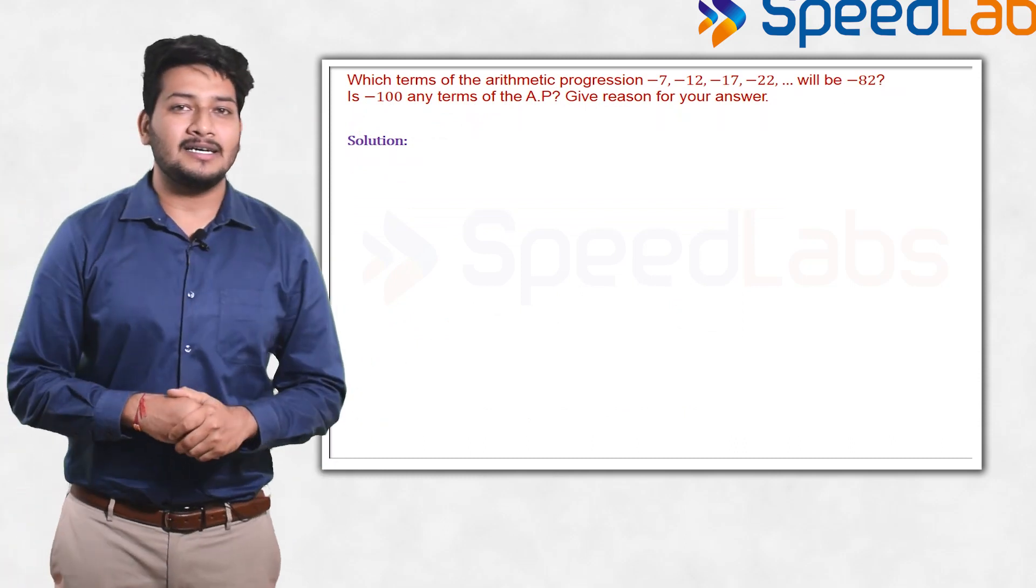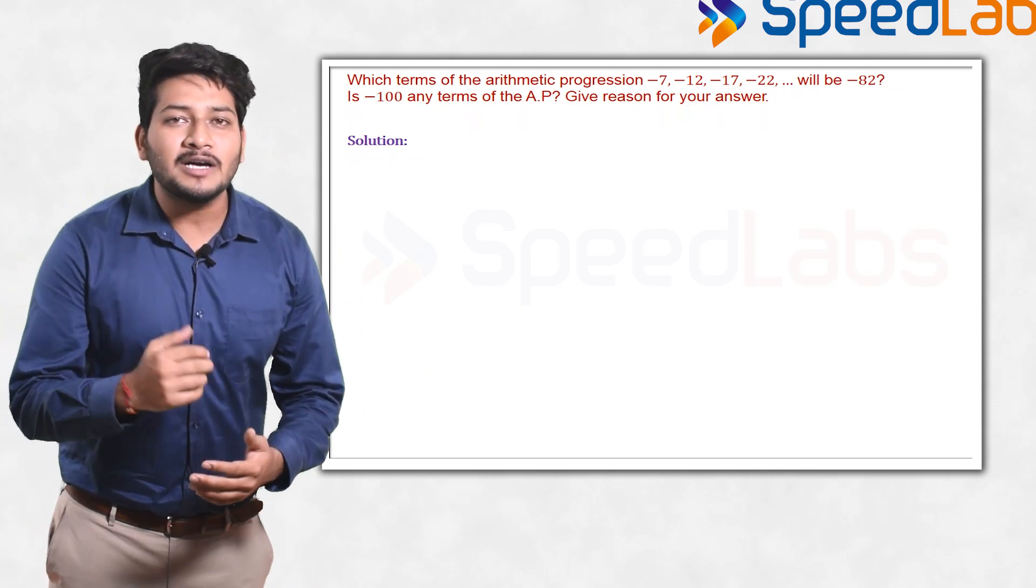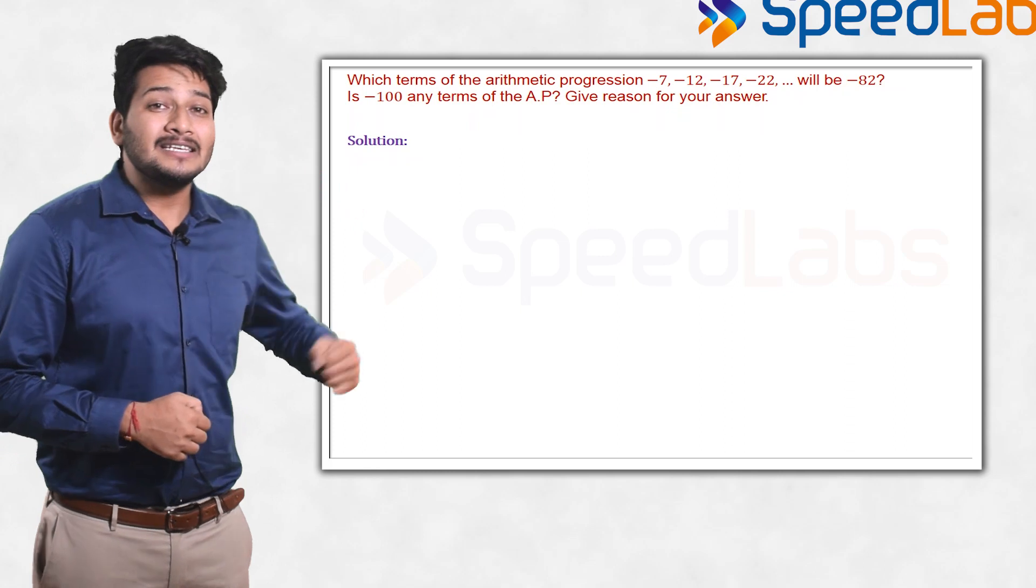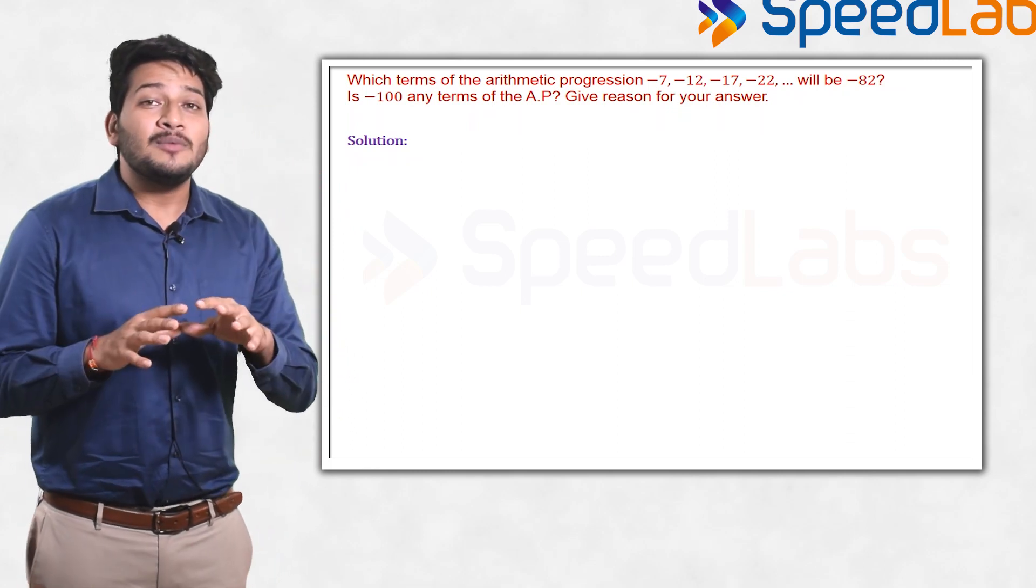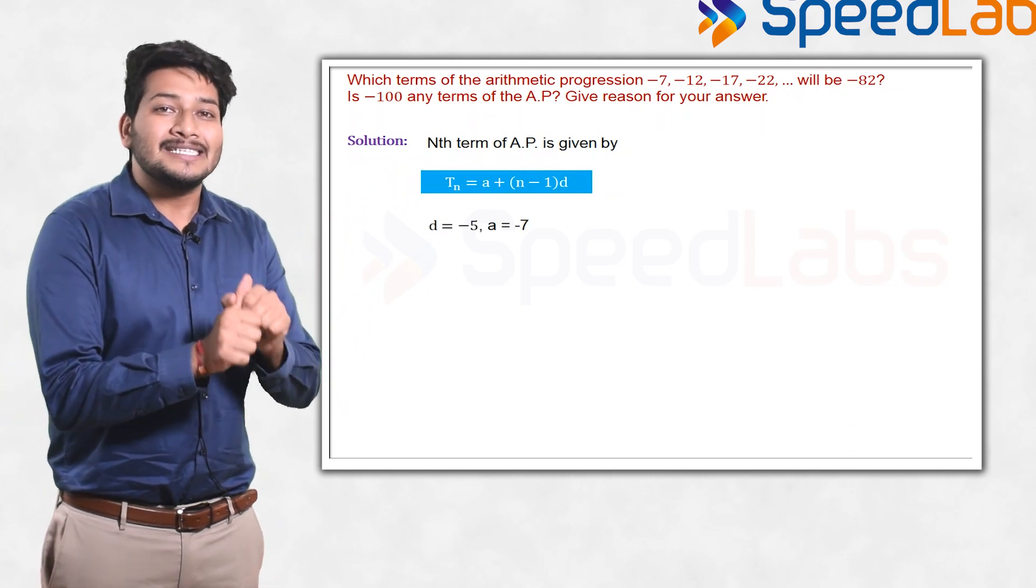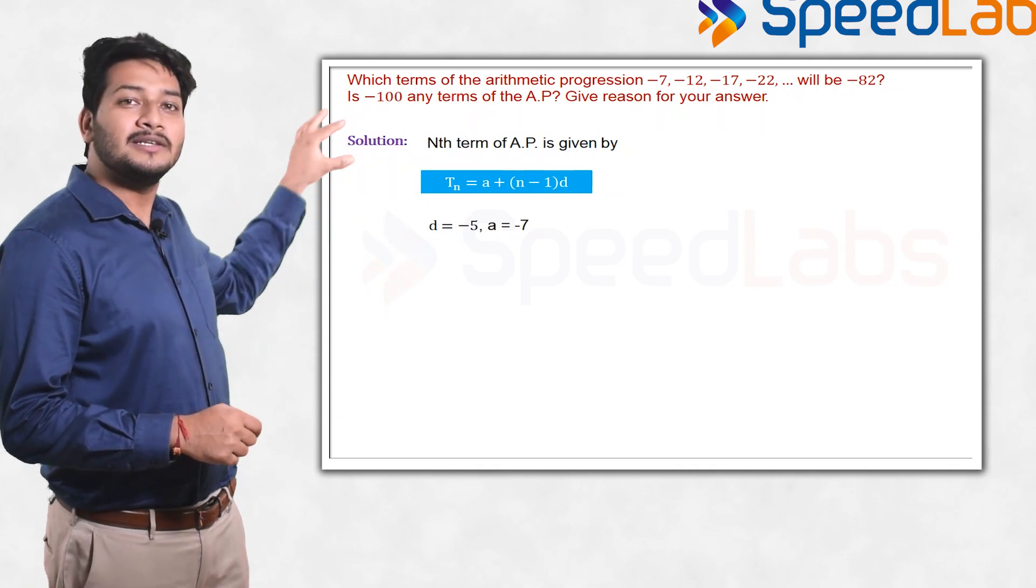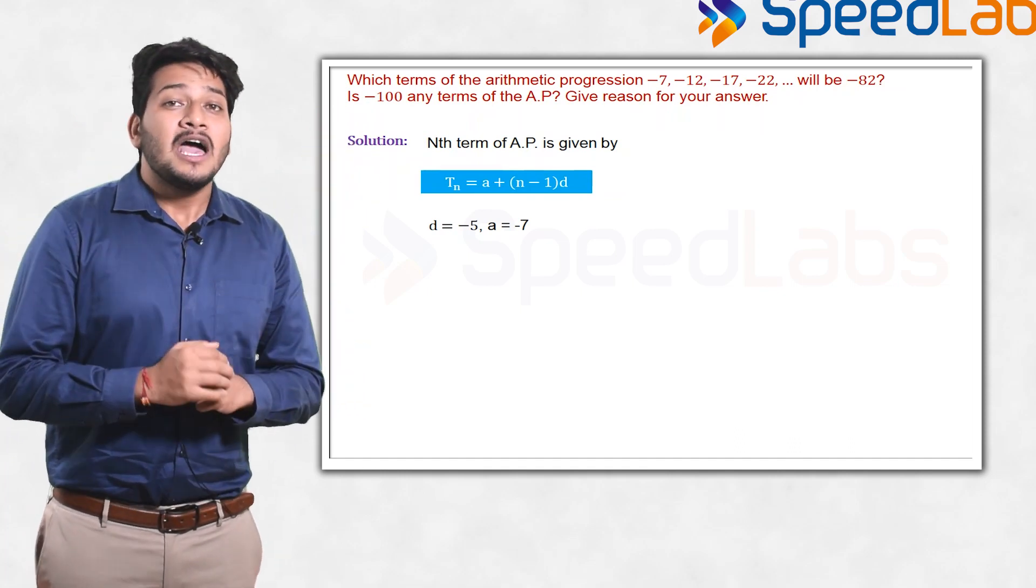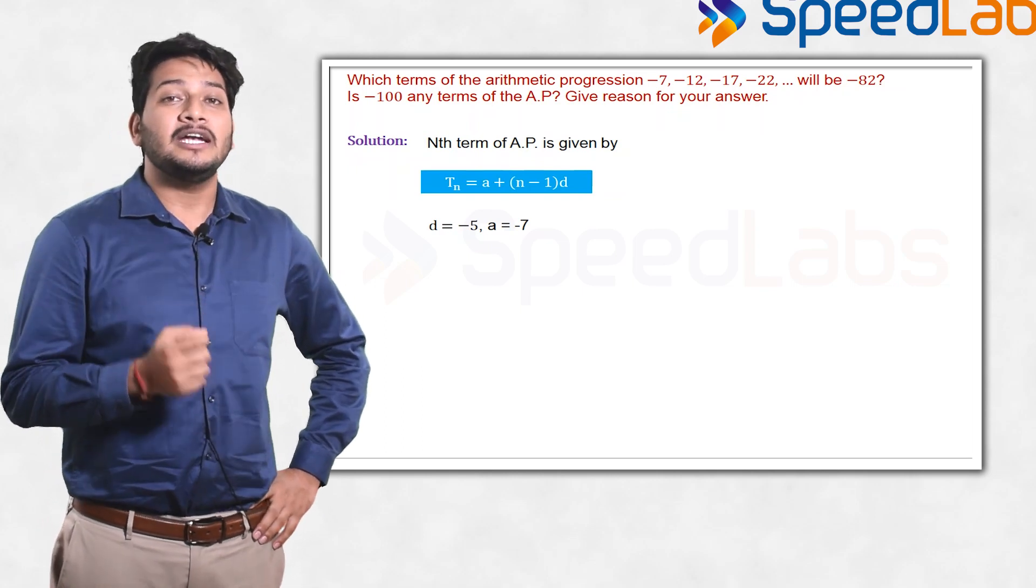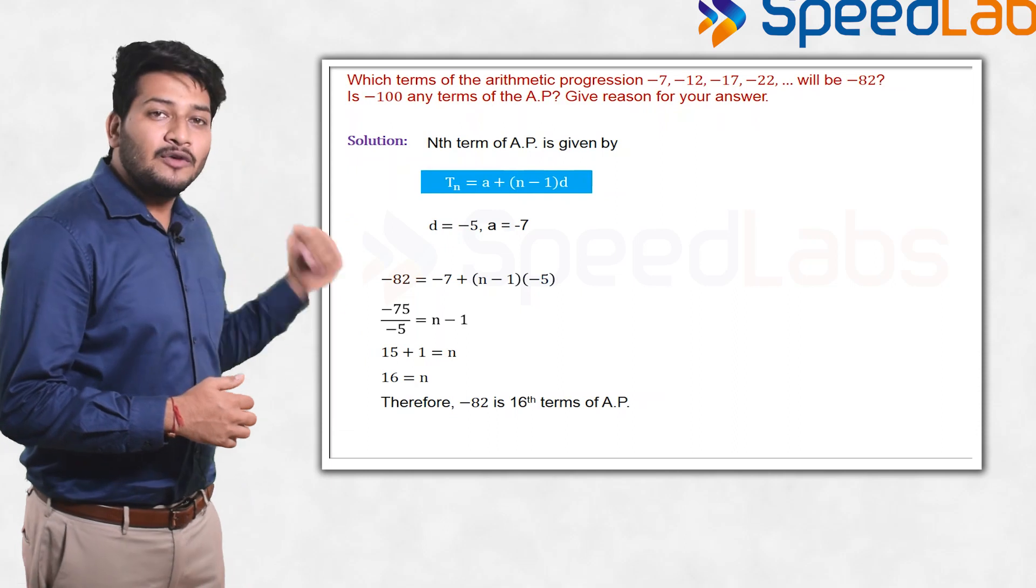The last problem which I will be discussing is related to arithmetic progression and the formula for the nth term. It's a very good question based on that. In the first part, you're asked which term of the given sequence is -82. What is the formula for nth term? Tₙ = a + (n-1)d. a is given to you, it is -7. d is the common difference, second term minus first term, so d is -5. You're told the nth term should be -82, and you have to find which term it is, meaning calculate the value of n. If you substitute the given values in the formula of Tₙ, where Tₙ is -82, a is -7, d is -5, and solve this equation for n, you get n as 16. So the 16th term of this progression is -82.